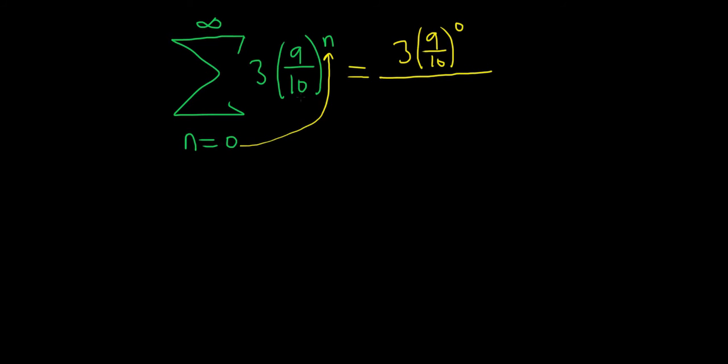This is, of course, assuming that the series converges, and in this problem, we're told it does converge. We can also easily verify it. Notice that r here is 9 over 10. It's whatever is being raised to the nth power. So on the bottom here, we'll just put 1 minus r. So 1 minus 9 tenths.